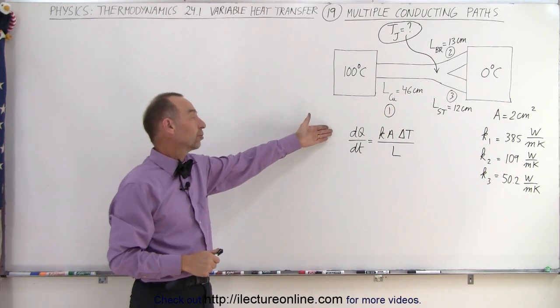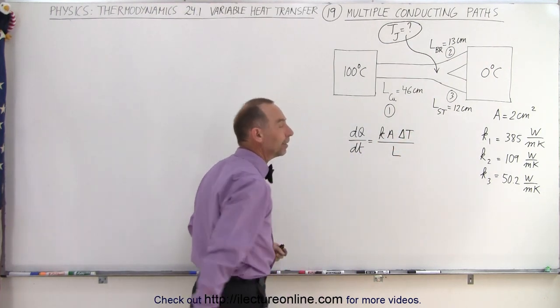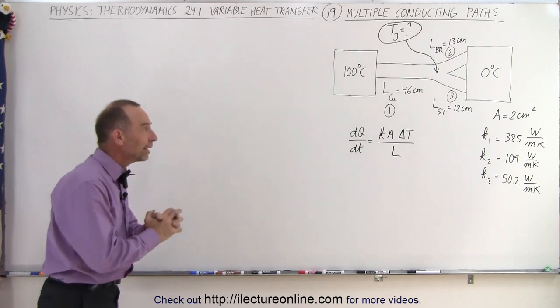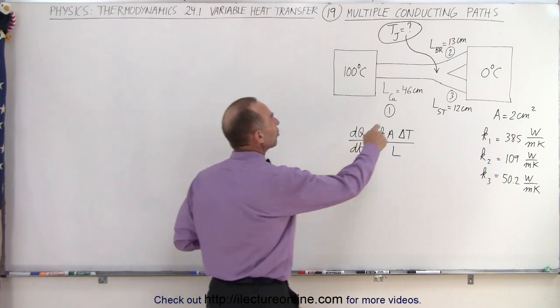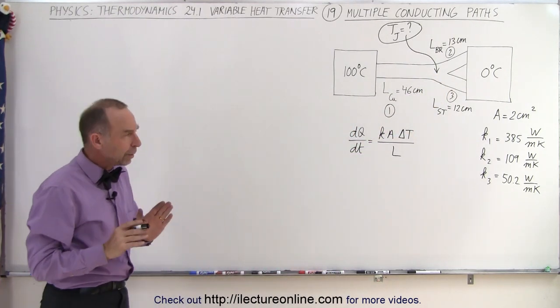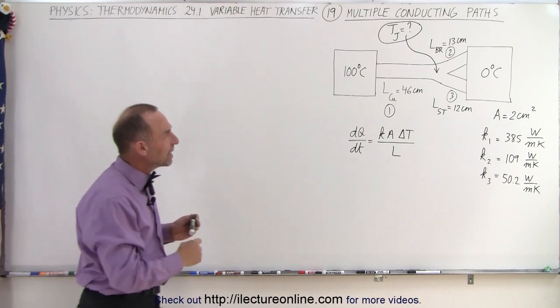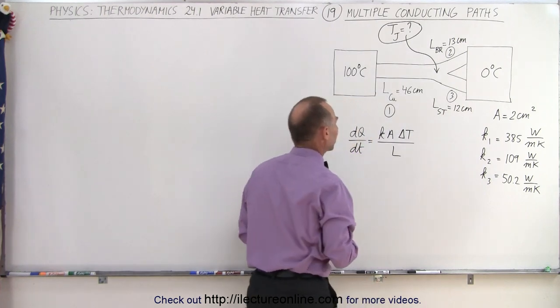The general equation is dQ/dt equals KA delta T over L. So how do we calculate the heat going across and find the junction temperature at that location? We have to realize that the amount of heat flowing through this path must equal the sum of the heat flowing through the other two paths.